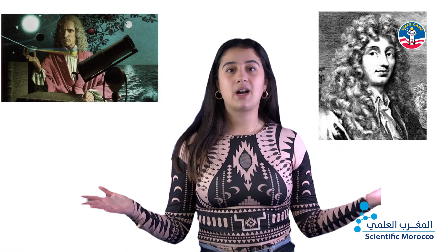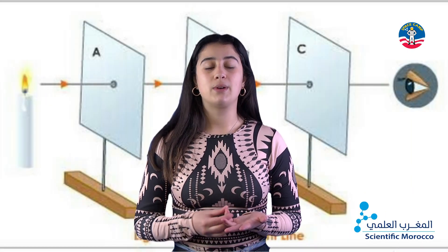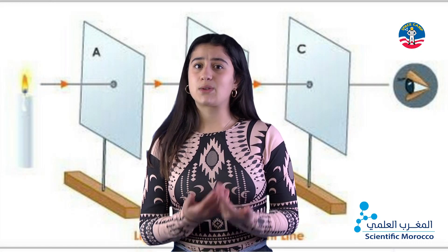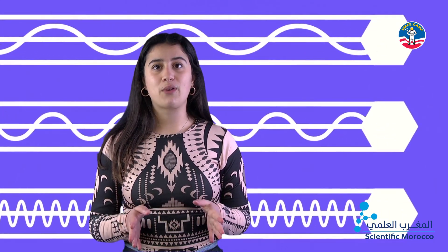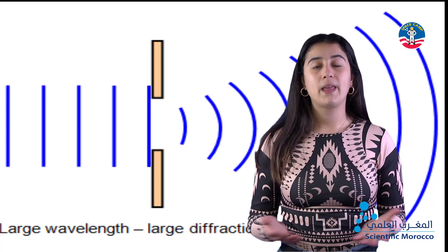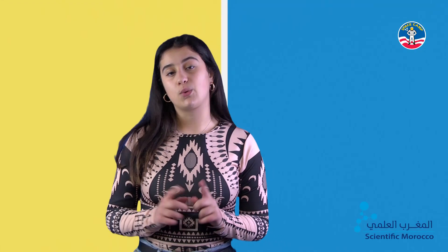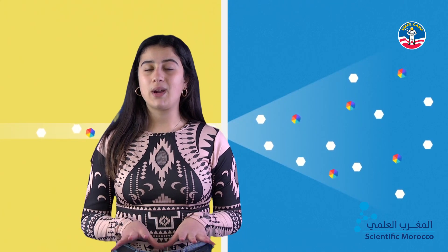There was a long debate between Isaac Newton and Christian Huygens about the nature of light. Newton assumed light as a particle because he noticed it travelled in straight lines and could travel through a vacuum, while Huygens assumed light as a wave because he noticed it diffracts when it passes around obstacles. In fact, both assumptions are true — that's what scientists call the duality of light. But today, I'll put the point on the wave assumption.